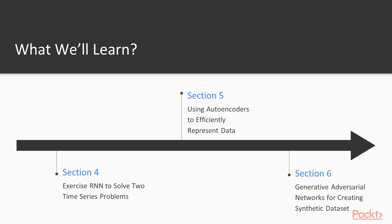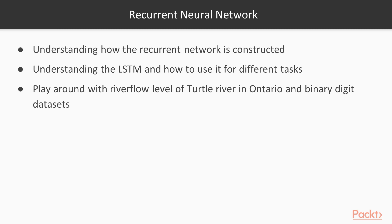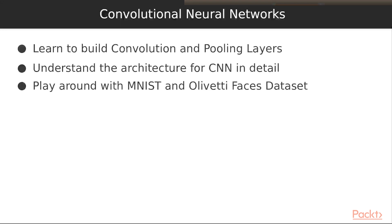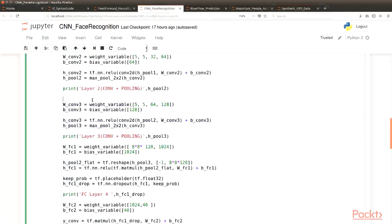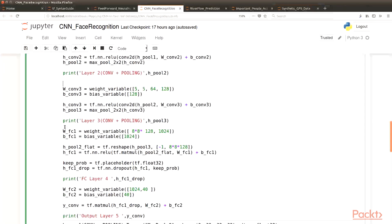Section 4 covers recurrent neural networks — the LSTM and their usage for different datasets you will encounter in your future work. For this we will be taking two datasets like River Flow and the Level of Turtle River. Our model is going to predict valuable insights that are nearly the same as the original data, making it quite intelligent. It's going to be the best part of the deep learning course.